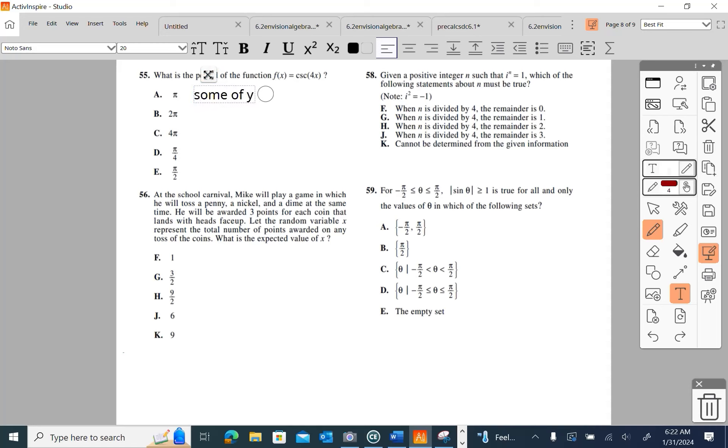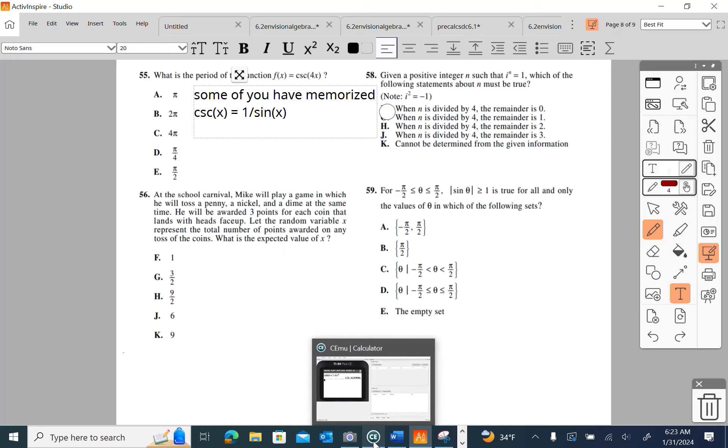Some of you have memorized that cosecant of something is one over sine. They talk about the period. You're actually supposed to learn things like this in your geometry, you are. You're supposed to learn what these graphs look like. It used to be done in Algebra 2 as well, and then it's done in pre-calc. I'm trying to think here since it's cosecant. And honestly, it's not appearing to me right now like it should, because I haven't done a graph of cosecant in quite some time.